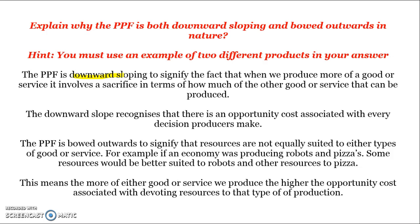The PPF is bowed outwards to signify that resources are not equally suited to either type of good or service. So if an economy is producing robots and pizzas, some resources are better suited to robots, others are better suited to pizza. The more of a good or service we produce, the higher the opportunity cost, because we start to devote resources that are less suited to that type of production. The PPF is bowed outwards when that opportunity cost is not constant. If the PPF were simply linear and sloping downwards, that would recognise that opportunity cost is constant along the PPF.